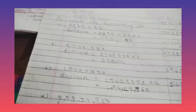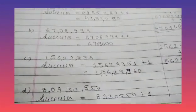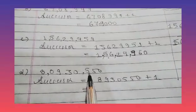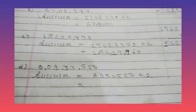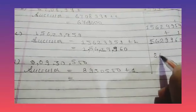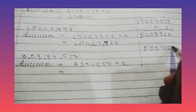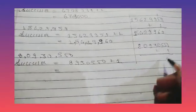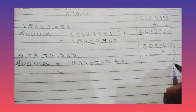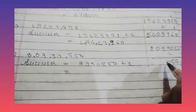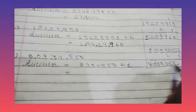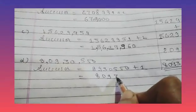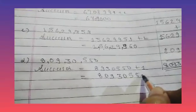Okay children. Now part D: we have 8 crore 9 lakhs 30,550. If we don't know verbally, we do the addition in rough work. Adding 1: 0+1=1, giving us 8 crore 9 lakhs 30,551.